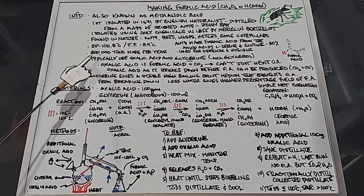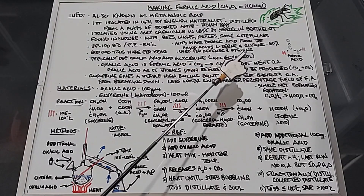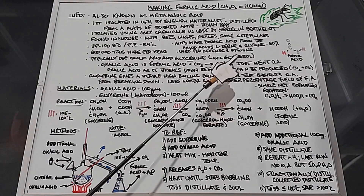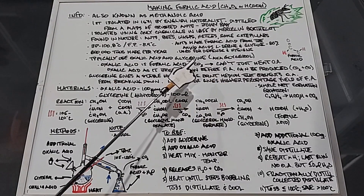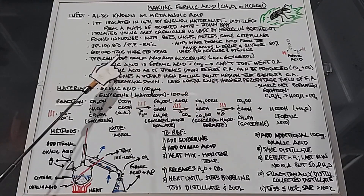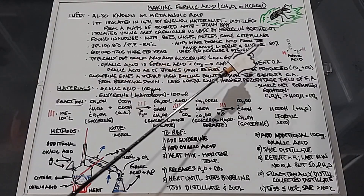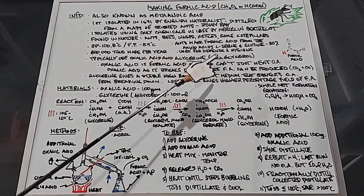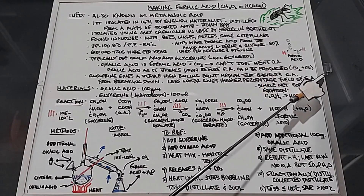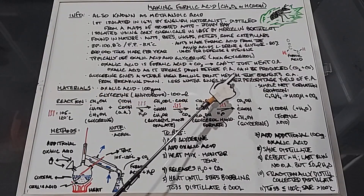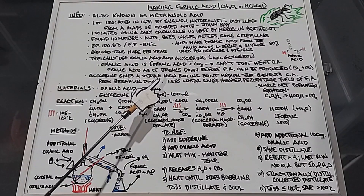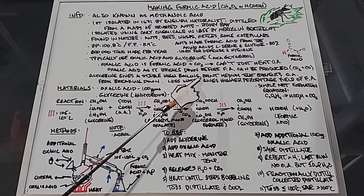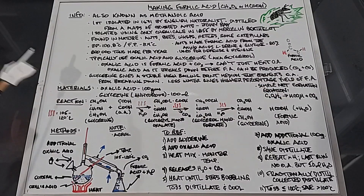Typically in a lab you use oxalic acid and glycerin, also known as glycerol — I'll be using these interchangeably throughout this video. Oxalic acid is essentially formic acid plus carbon dioxide. Normally when you heat something like this you can get rid of the CO2 and you have formic acid, but you can't just heat oxalic acid directly, because it breaks down before you can form formic acid — it breaks down into carbon dioxide and carbon monoxide. Glycerin gives a stable high boiling point medium that prevents the oxalic acid from breaking down. And if you're going to do just a single distillation, the closer to an anhydrous glycerin, meaning less water, the higher the percentage yield of formic acid.